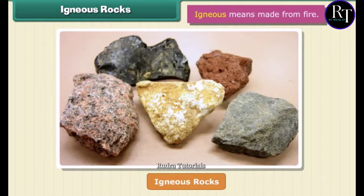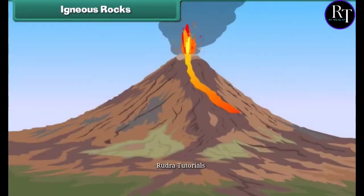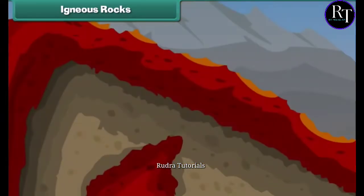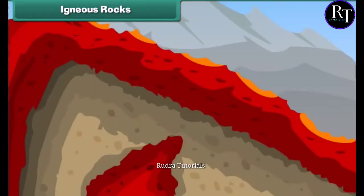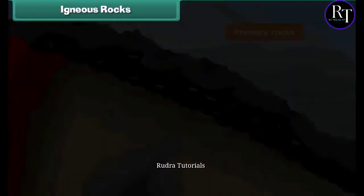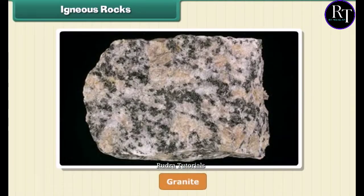Igneous means made from fire. When volcanoes erupt, it causes the liquid rock to rise above the ground. When this liquid rock is present inside the earth, it is called magma. This magma cools and becomes solid. Rocks thus formed are called igneous rocks. They are also called primary rocks. Granite is an example of igneous rock.